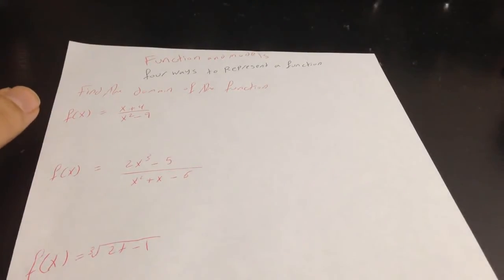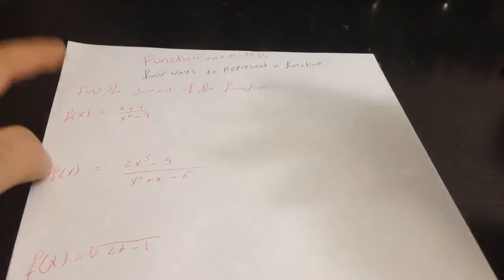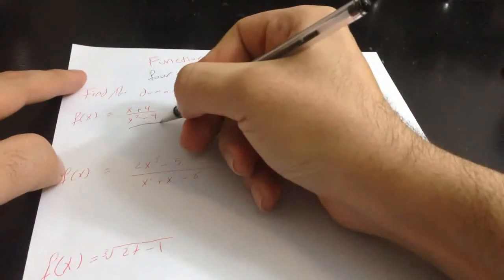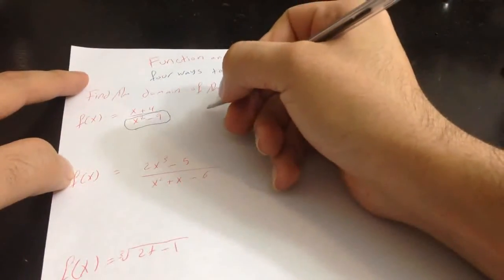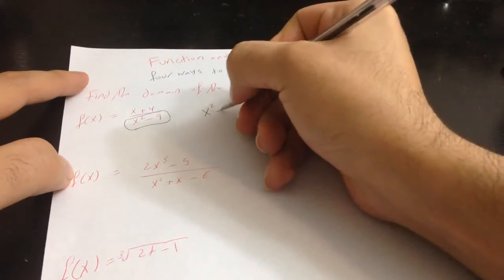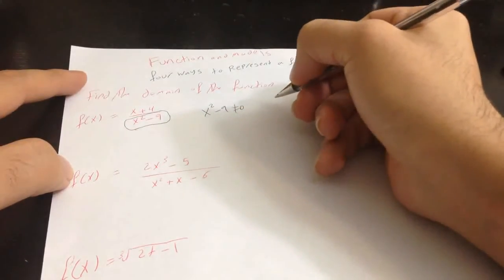x plus 4 over x square minus 9. To find the domain is very easy. All we have to do is just look at this part, so write x square minus 9 is not equal to 0. To solve this,